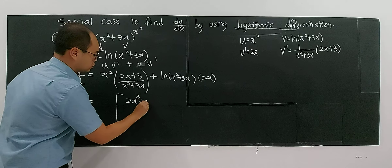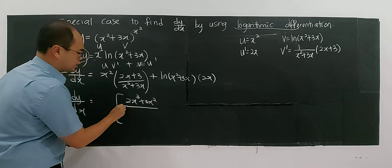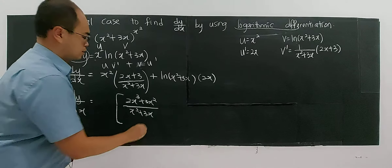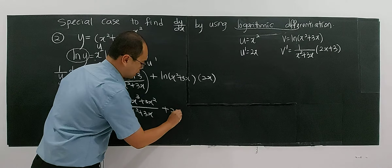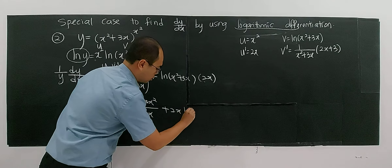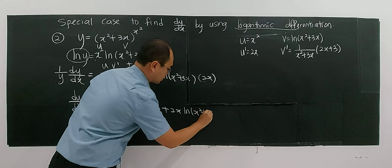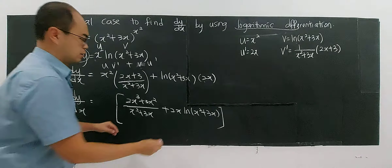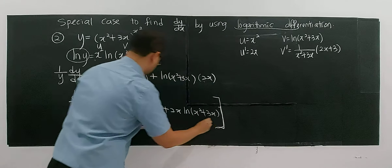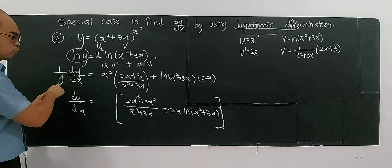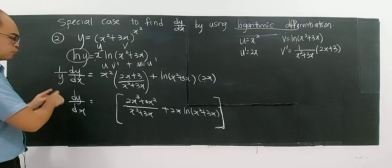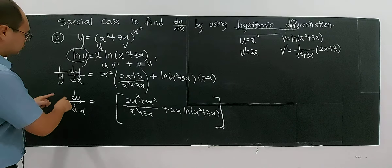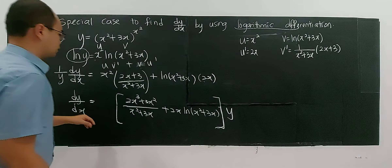So u is x², v prime is (2x + 3)/(x² + 3x), plus v which is ln(x² + 3x), times u prime which is 2x. That completes the right-hand side.